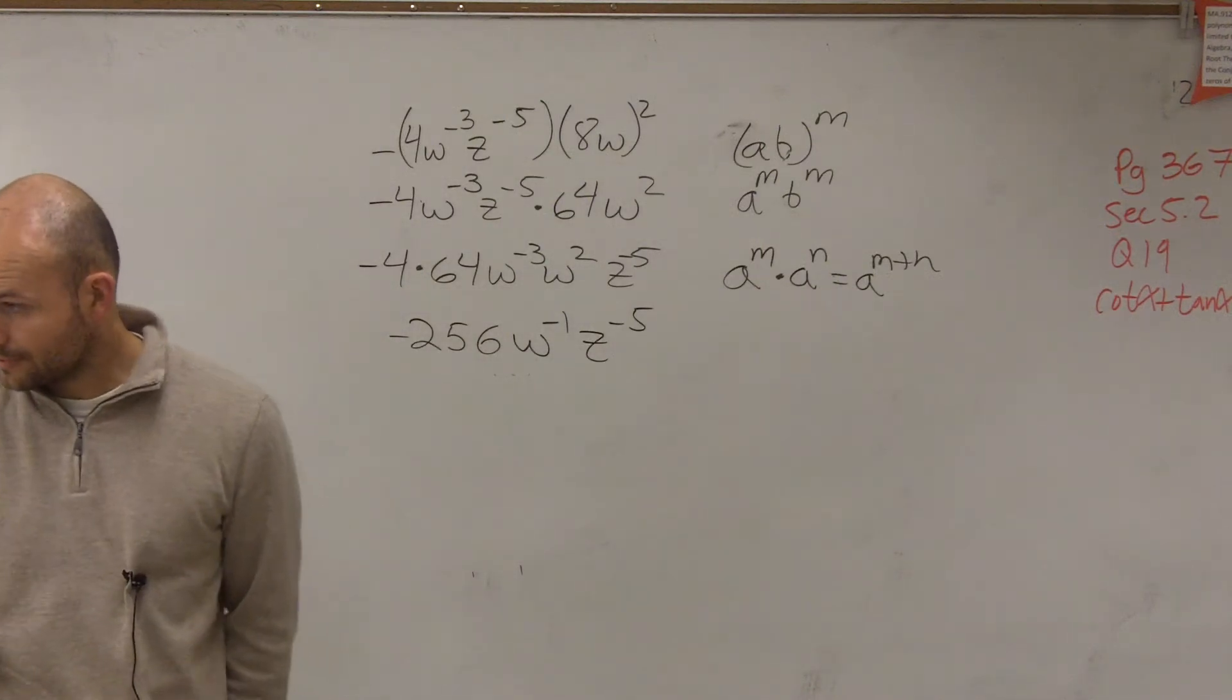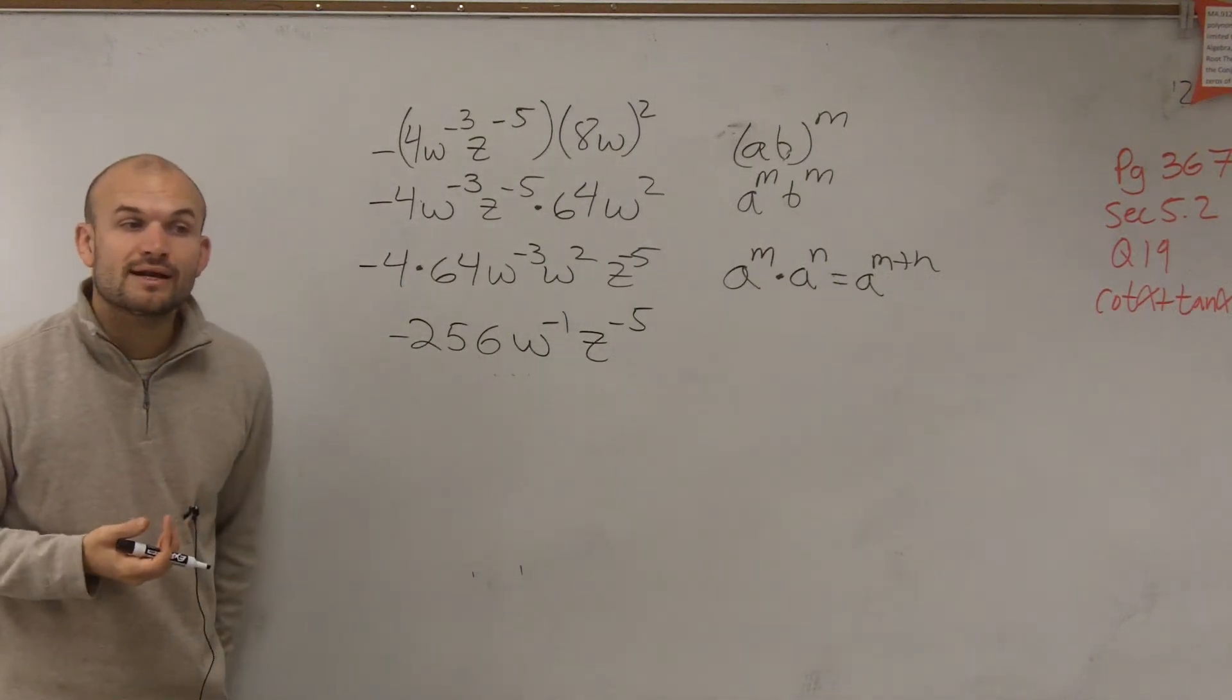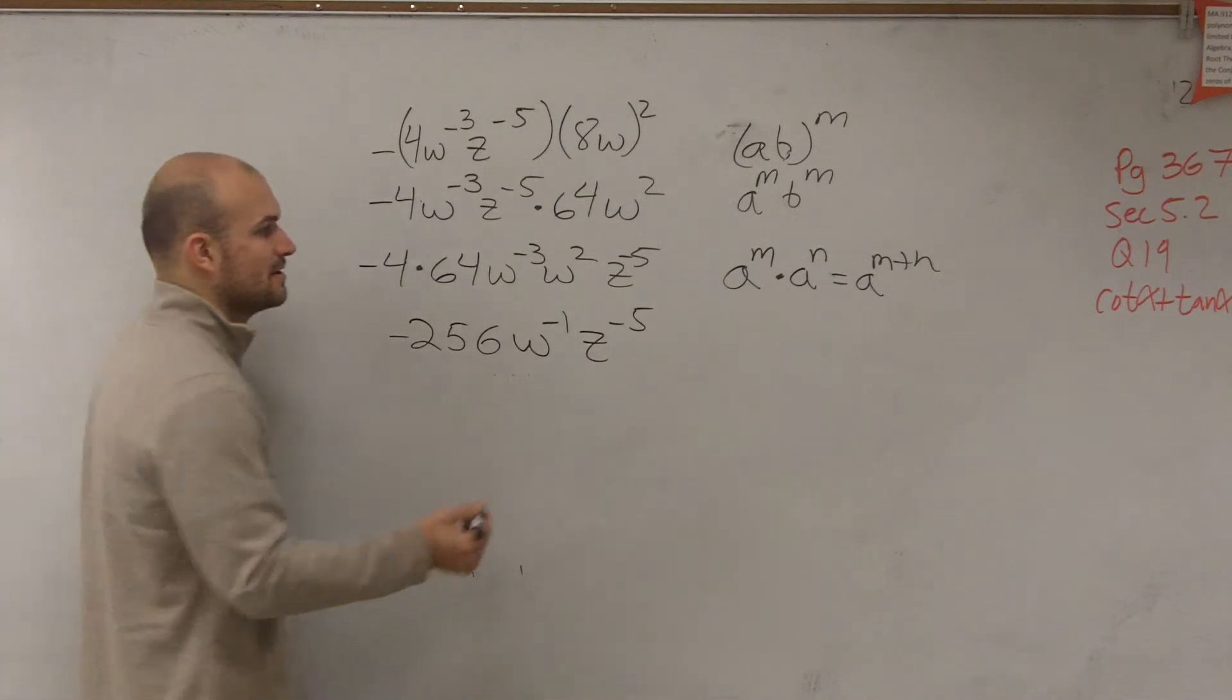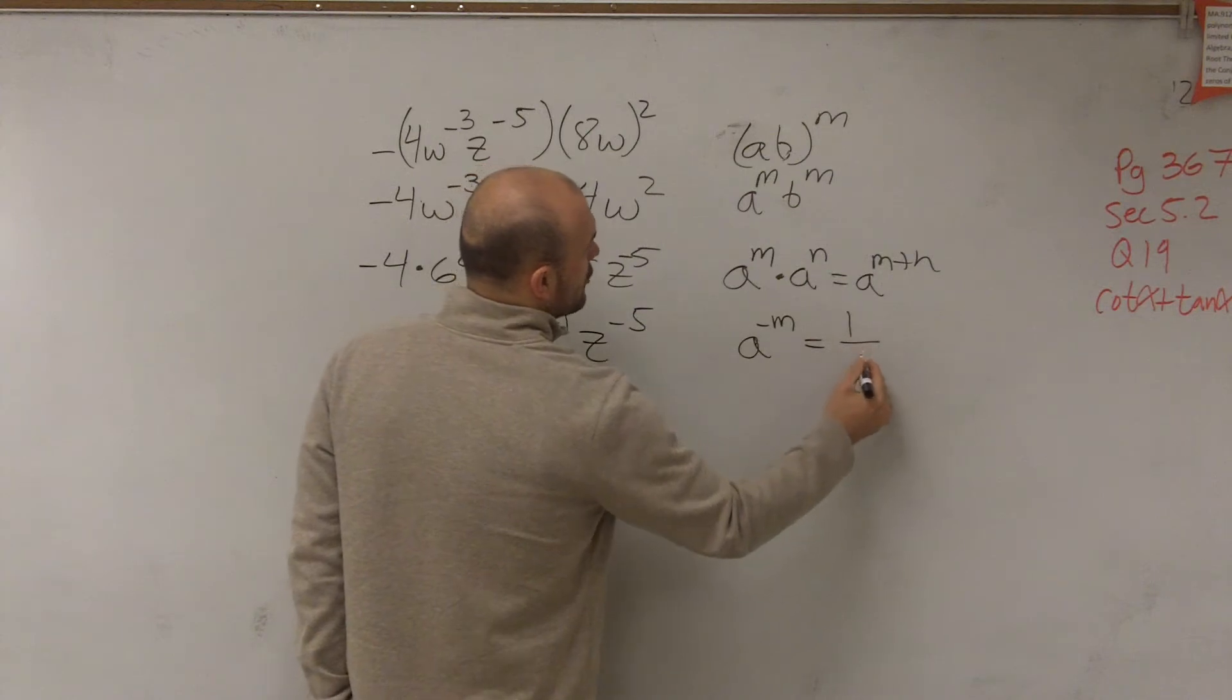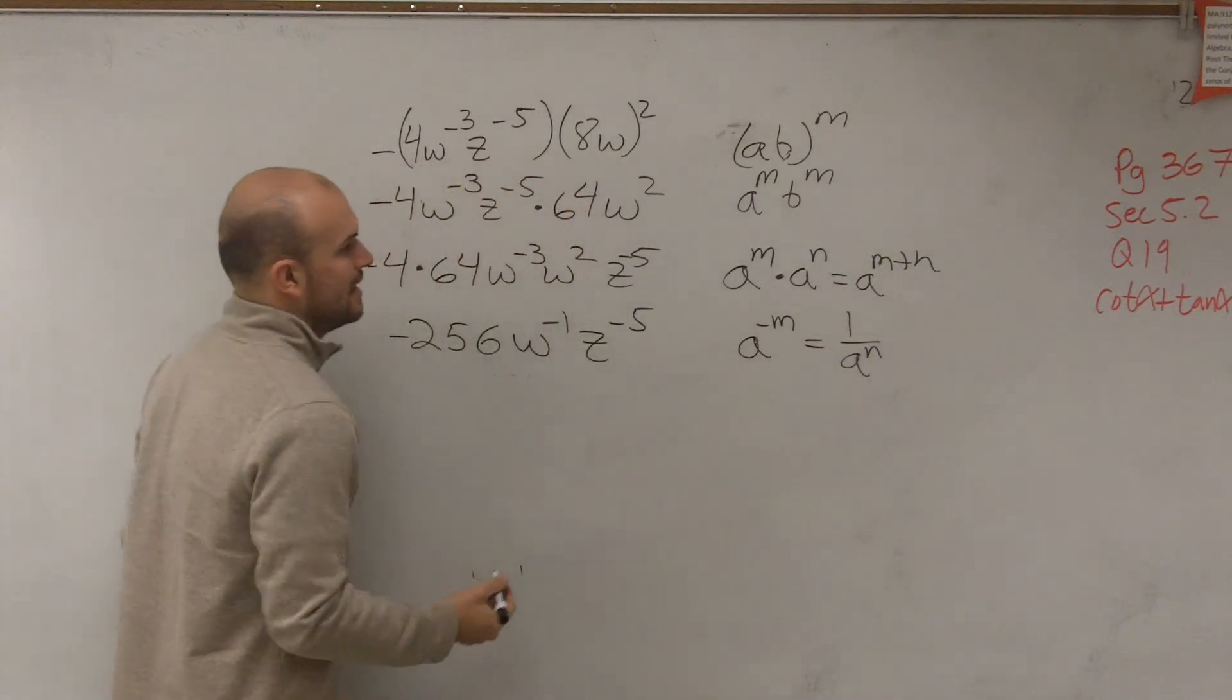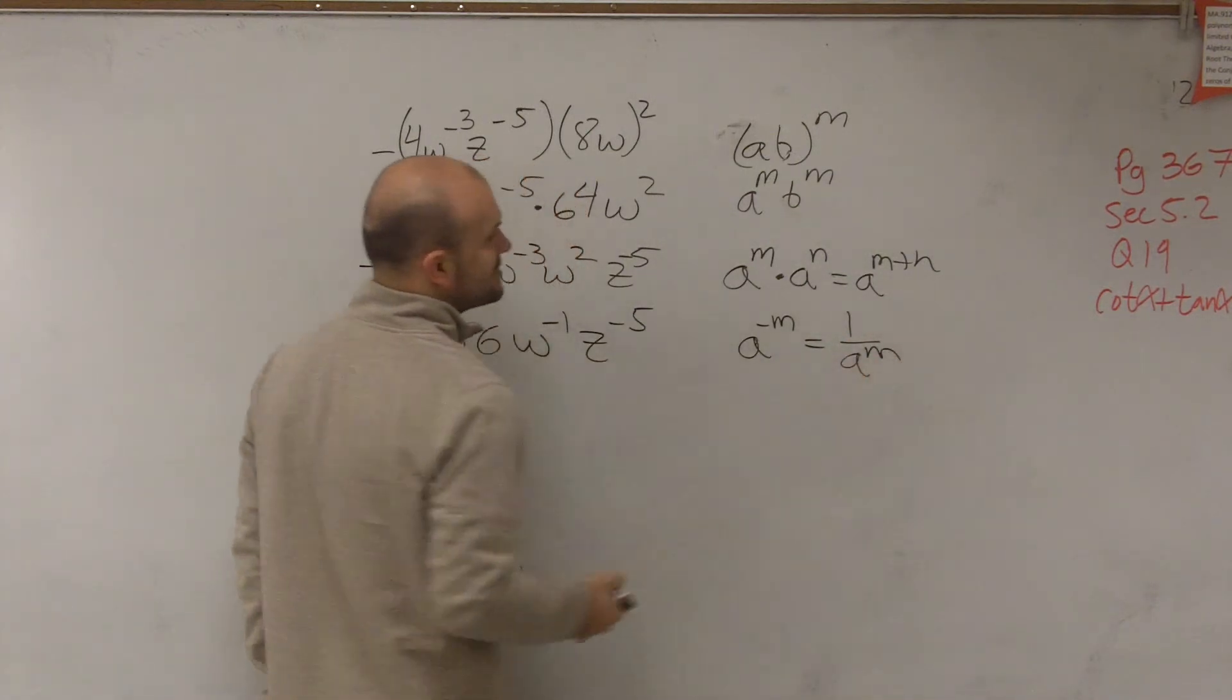Now the last step is we've got to make sure we're writing our expression without any negative exponents. And our rule is a to the negative m equals 1 over a to the positive m.